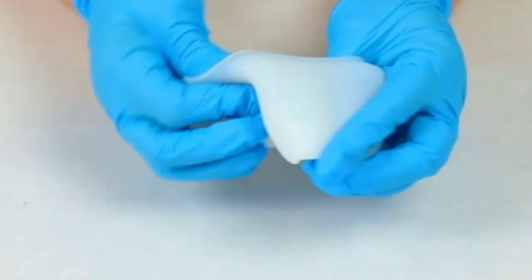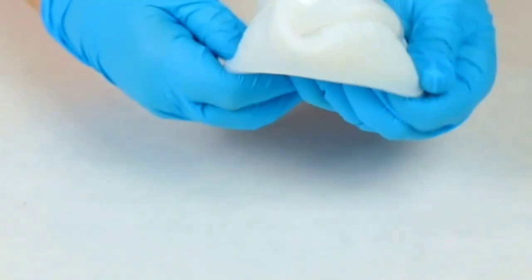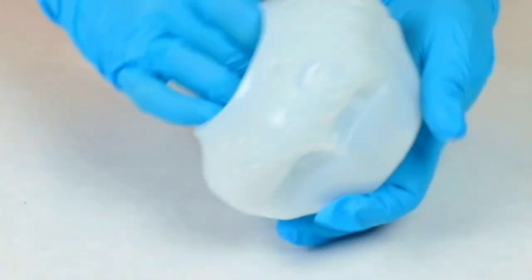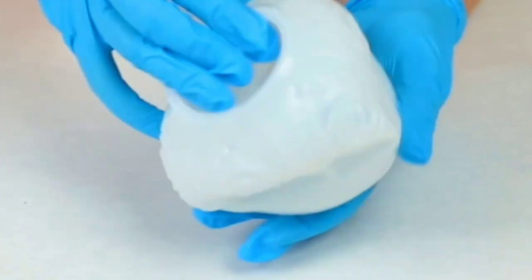So I got these molds from Amazon and they're about four inches wide by two inches high and they have a really gorgeous rose pattern on the inside.